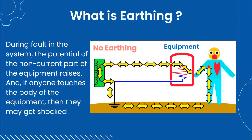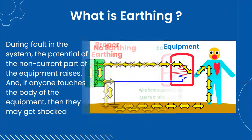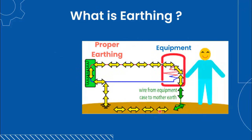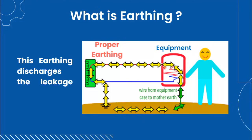And if a human touches the body of the equipment, he will get electric shock because the path of current is completed through his body. Now if the same equipment body is connected to the earth, then in case of the same fault, this earthing discharges the leakage current into the earth without entering the human body.